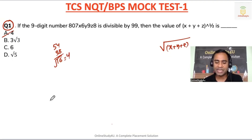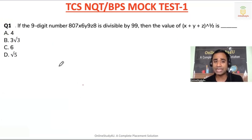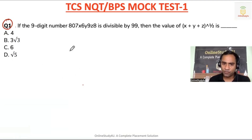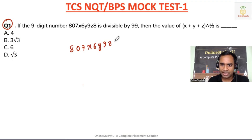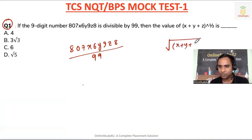You have to be that quick in the examination to solve these problems. Many of you, when you see the problems, will not be able to solve them or will leave them. Let us understand the logic first. So the nine-digit number is 8, 0, 7, x, y, 6, 9, z, 8 and it is divisible by 99. We need the value of x plus y plus z to the power 1/2, which means the square root of x plus y plus z.